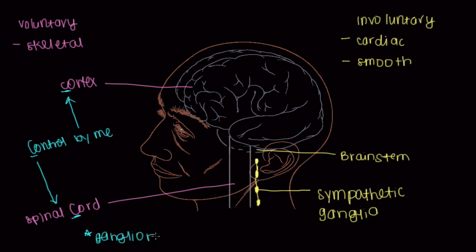A ganglion is just a cell body, or a soma of a neuron, that sits outside the brain and spinal cord. And most of these ganglia sit beside the spinal cord. So that's an important point.